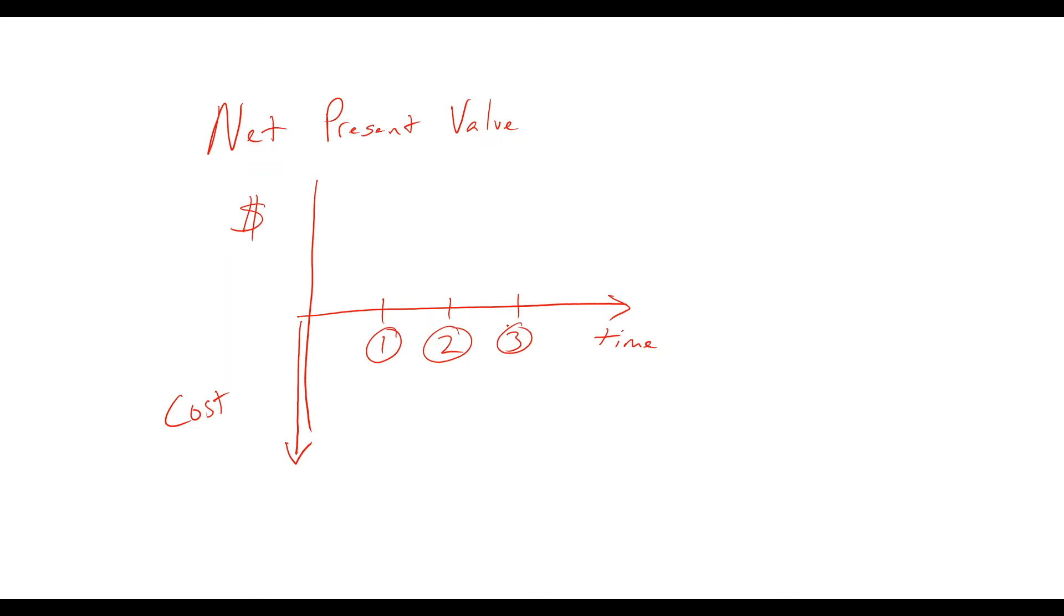Let's say we spend some money upfront, and in return we get $500 every year in savings. So we have $500 the first year, $500 the second year, and $500 the third year. That's our cash flow diagram—that's what our project looks like.